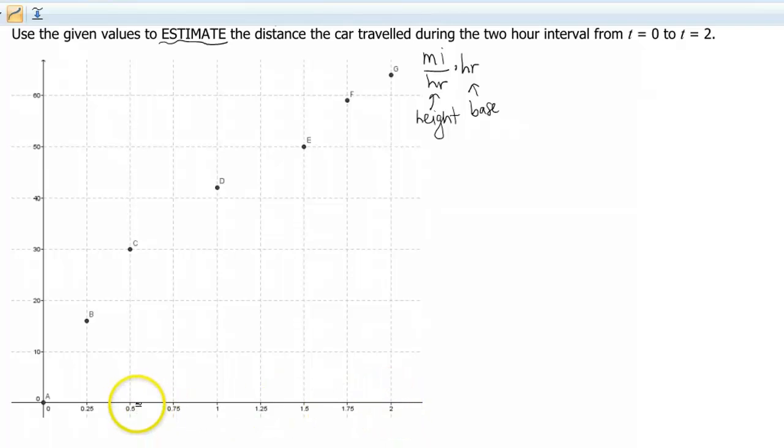Okay? Because we know things at a half, we know at one, and we know at one and a half. So I'm gonna go ahead and circle those values. And then we also know two, and then we also know zero, as it turns out. Okay. All right, so let's start with some left-hand endpoints.